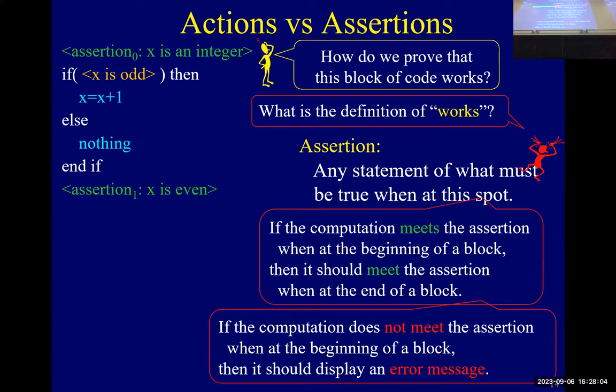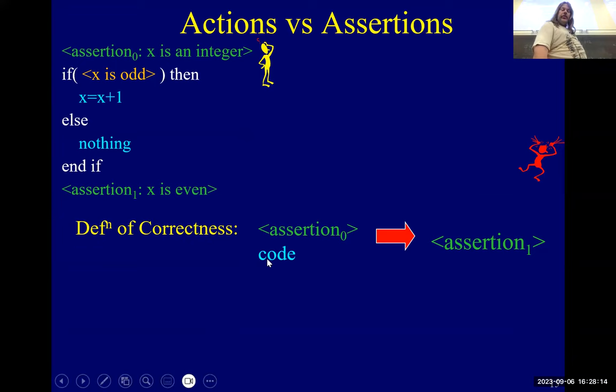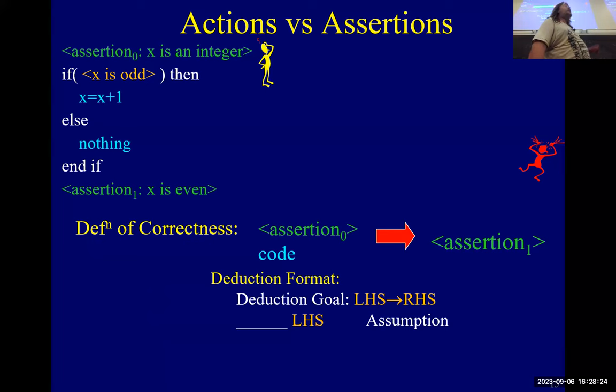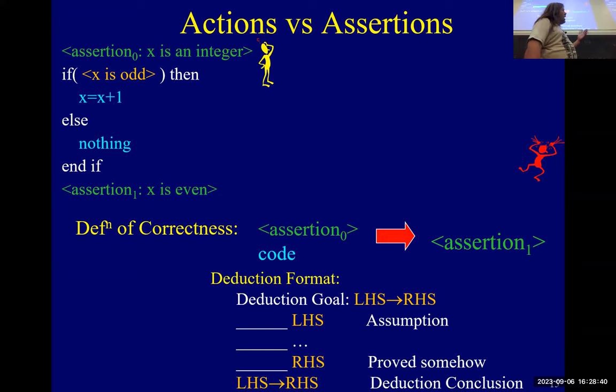Assertion zero is true, we do this code, we get assertion one. To do deduction — you might remember — is: to prove that if the left-hand side is true you get the right-hand side, you first assume the left-hand side is true, then you go through and prove the right-hand side, and then you conclude.